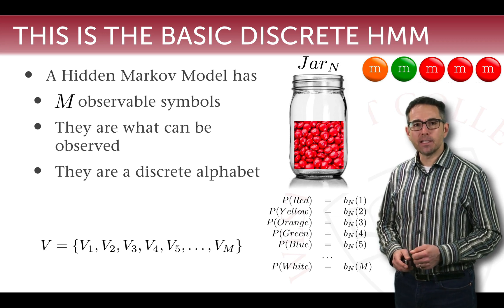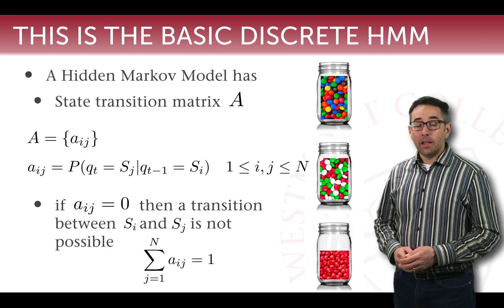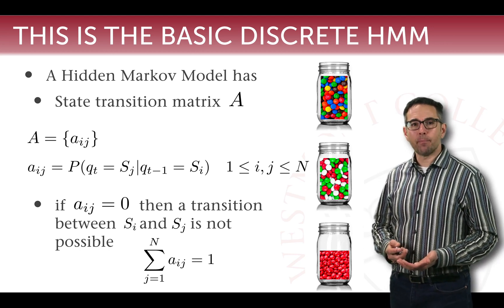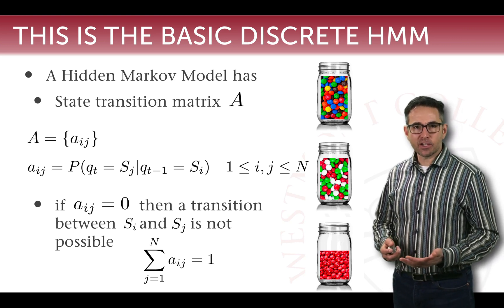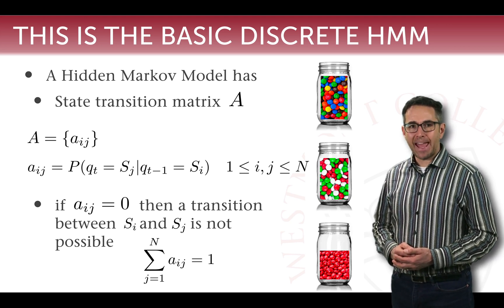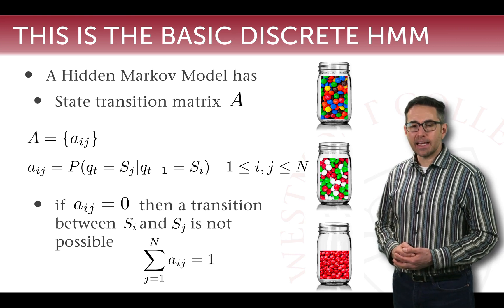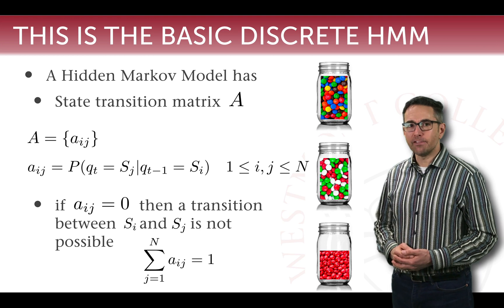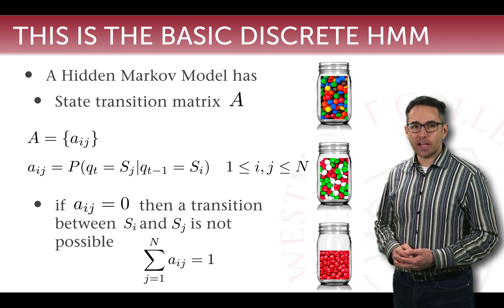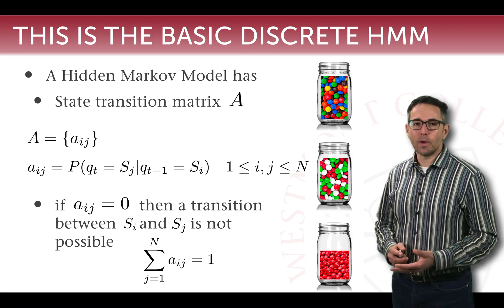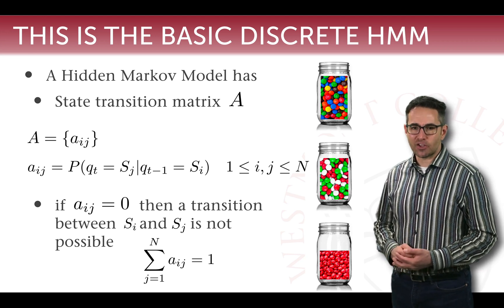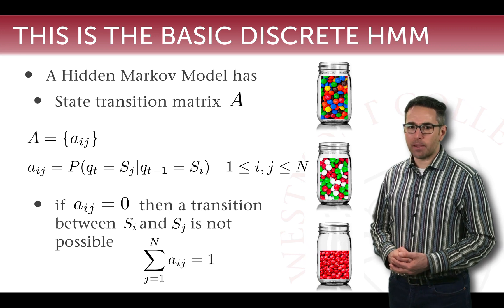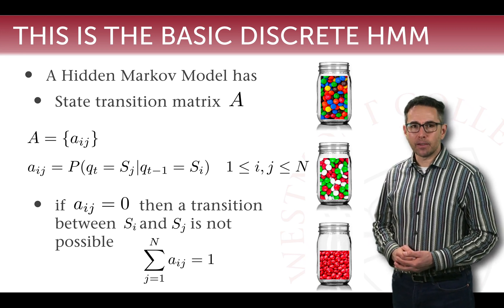The first two things a discrete Markov model needs are N states and M observable symbols. Next, a hidden Markov model must have a state transition matrix — exactly the same as an observable Markov model. We call it capital A, consisting of elements aᵢⱼ, which represent the probability of moving from state i at time t−1 to state j at time t. Formally, aᵢⱼ is the probability that at time t we are in state qₜ = Sⱼ, where i and j are between 1 and N. It is a two-dimensional matrix describing the probability of moving from one state to another.